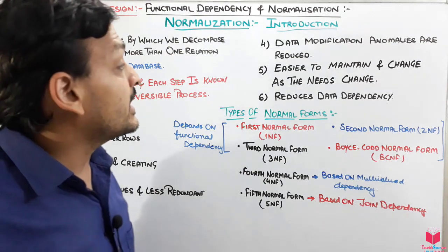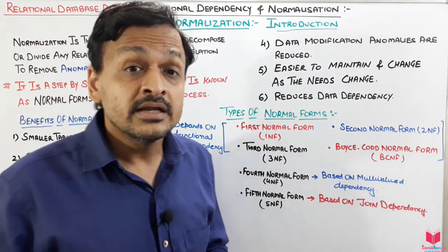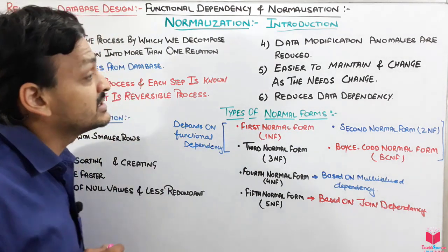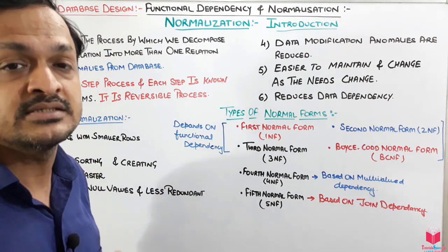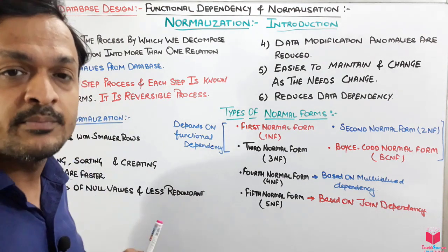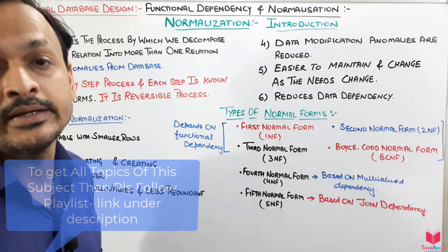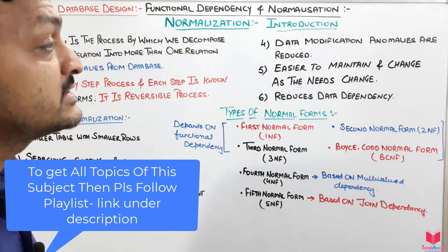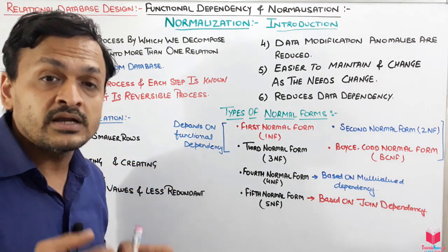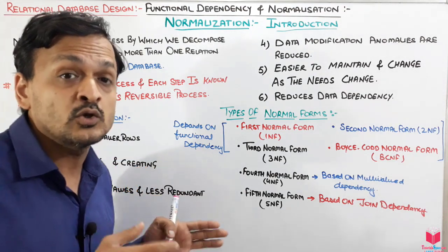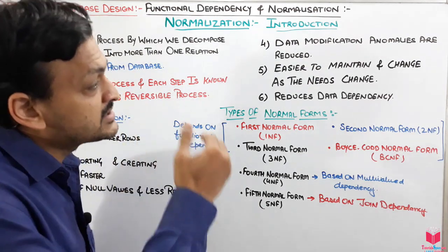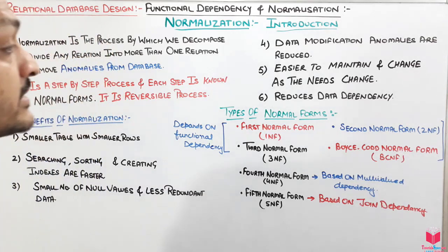Normalization also makes it easier to maintain and change the database as needs change. If there is a future requirement to change the database or a table, we can do so easily. Furthermore, it reduces data dependency — when lots of data depend on other data, problems arise, and normalization reduces that dependency.